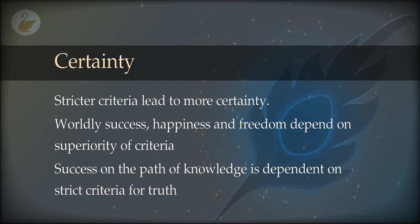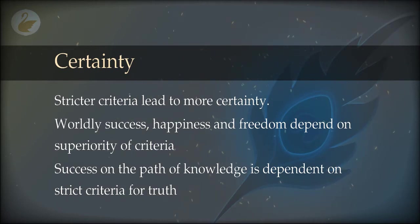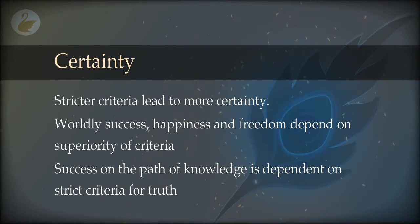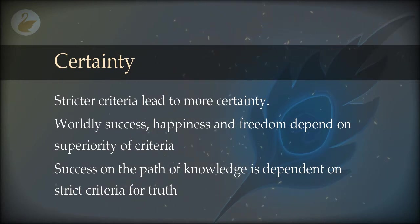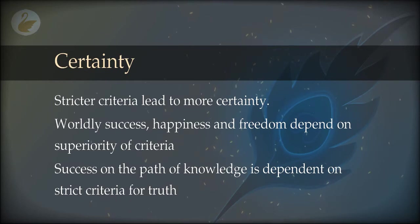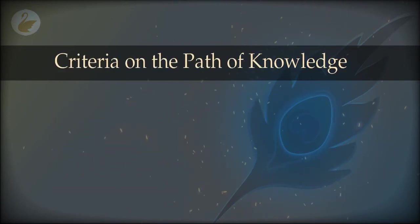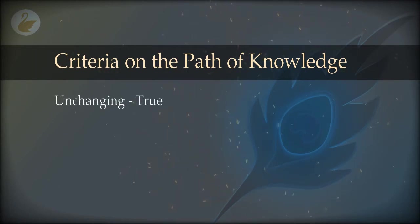Now you can imagine that when your life goal is knowledge or truth and you want to be free from all that is false, you must choose the strictest possible criteria. You cannot be loose about it, otherwise you will end up in ignorance again and again. So the more strict the criteria are, the more certain is your knowledge, the more true it is. There is less chance of it getting changed depending on situations. So after knowing the importance of choosing a superior set of criteria, we can set up a criteria for truth on the path of knowledge. It is very simple: we choose that which is ultimate, which is the most strict. We call all that which is unchanging as true, and we call that which changes as false.